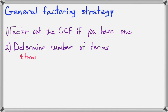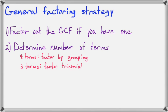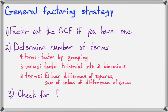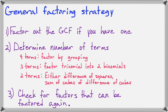Next, you're going to decide how to factor the terms in parentheses — if you have a GCF — based on the number of terms. If it's four terms, you're going to factor by grouping. If it's three terms, you're going to factor it into two binomials. If it's two terms, it has to either be a difference of squares, a sum of cubes, or a difference of cubes. Those are the only three methods that work on two-term problems.